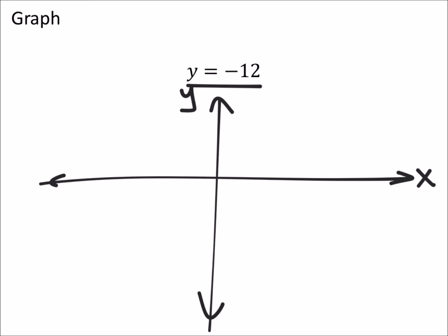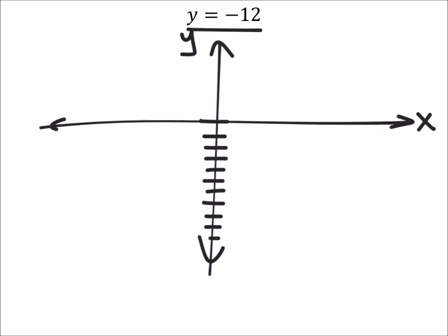Well, let's go down 12 from 0. 1, 2, 3, 4, 5, 11, and 12. So this is the point where y is negative 12 on the y axis, right?